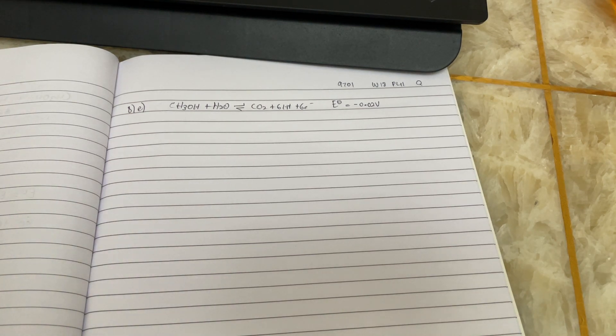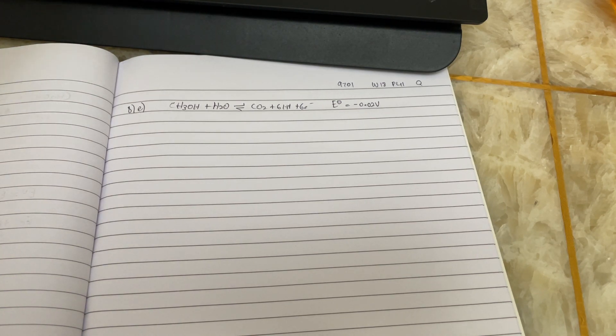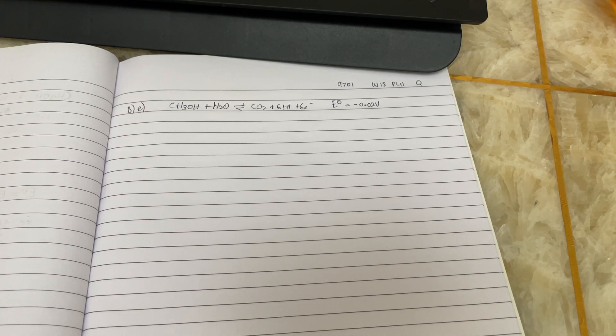Hello everyone, today I'll be covering question 8 part E of A-level chemistry, October-November 2018, paper 41. The last question, according to the examiner report, provided challenging for many candidates, especially the second part, the latter part, calculating the voltage.